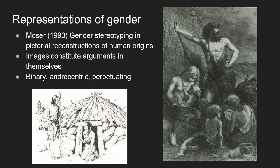This is based on Moser's work from 1993 and her PhD, in which she looked at gender stereotyping in pictorial reconstructions of human origins. She found a real trend to show men at the centre of pictures, active and dominant, and women stooped and subservient. When I opened that document and saw it, my heart leapt into my mouth. Moser argues that images constitute arguments in themselves, and we're sending this out to schools — so that's really important.